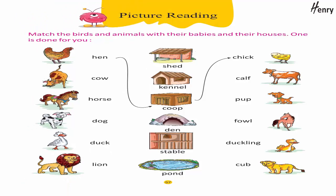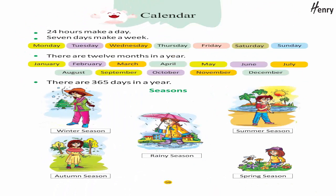Picture reading — match the birds and animals with their babies and their houses. One is done for you. Calendar: 24 hours make a day. 7 days make a week: Monday, Tuesday, Wednesday, Thursday, Friday, Saturday, Sunday. There are 12 months in a year.